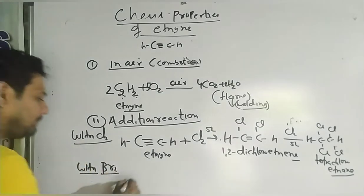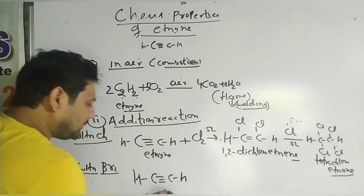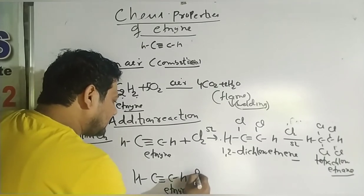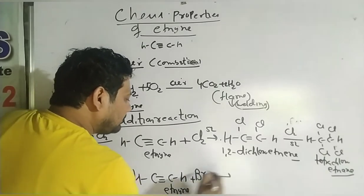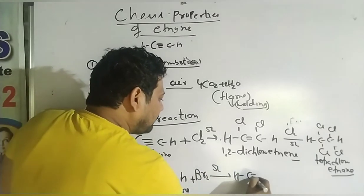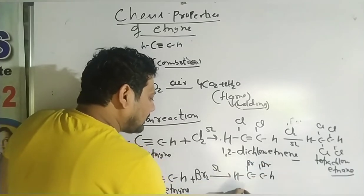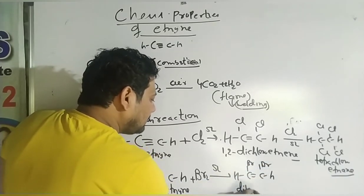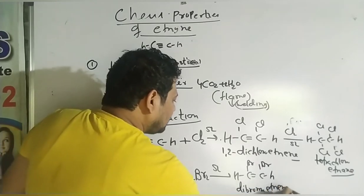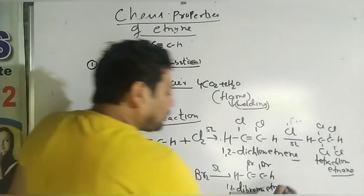Bromine se bhi same reaction hogi. H-C≡C-H — the name is ethyne. If we add bromine in sunlight, first the triple bond becomes a double bond and two bromine atoms are added — this gives 1,2-dibromoethene. Adding more bromine gives the single bond product.